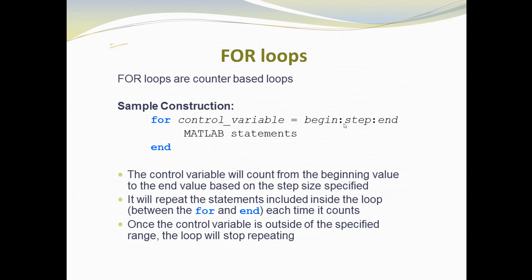Once the control variable goes outside the specified range, the loop stops. For example, if the end value is 10, after the loop runs with value 10, the value becomes 11. The loop then sees that 11 is outside the range, so the statements no longer execute and the loop exits. The next statement after the loop then executes.